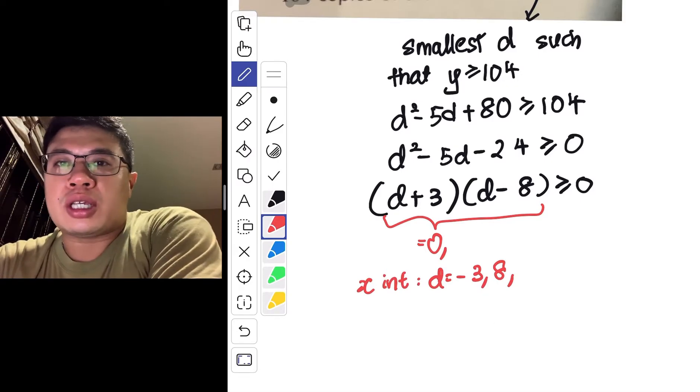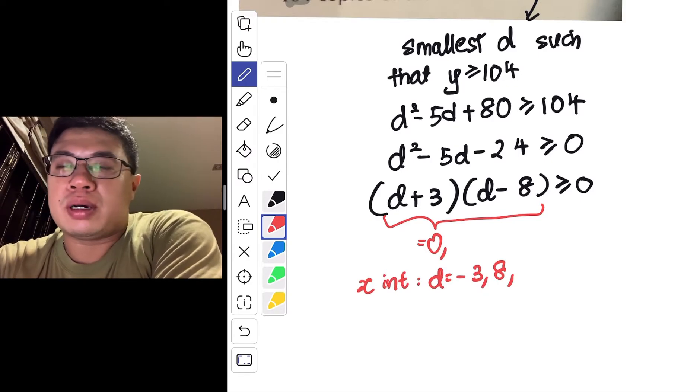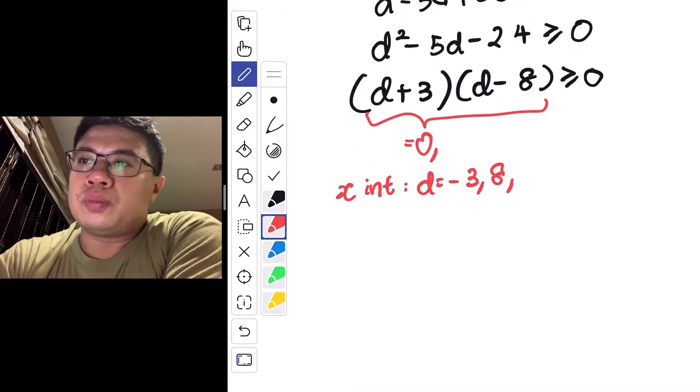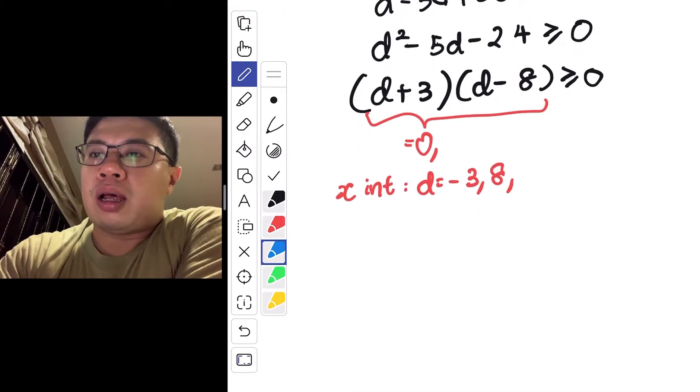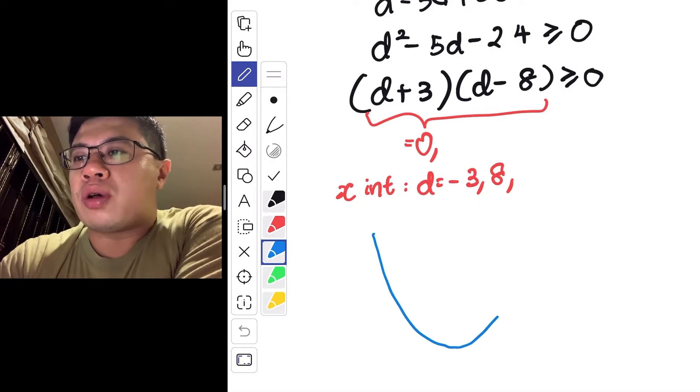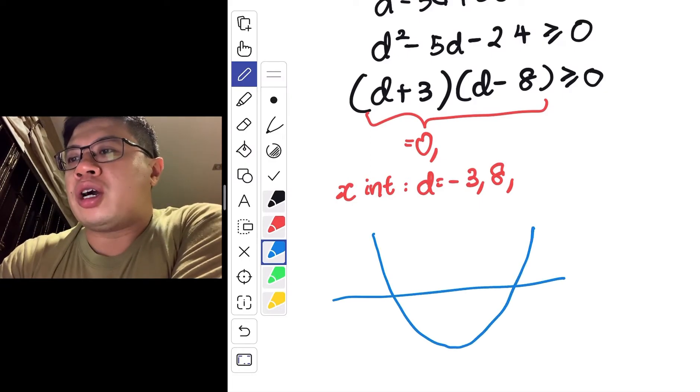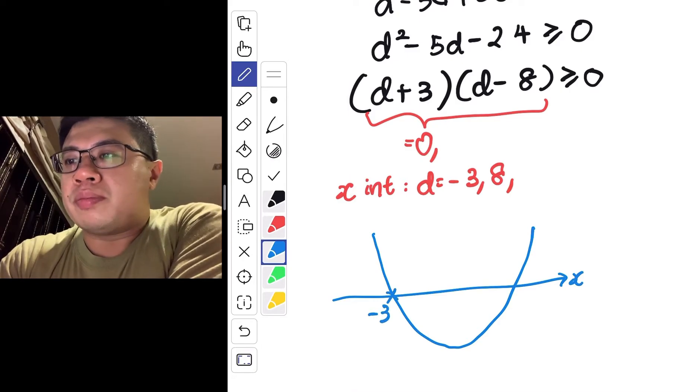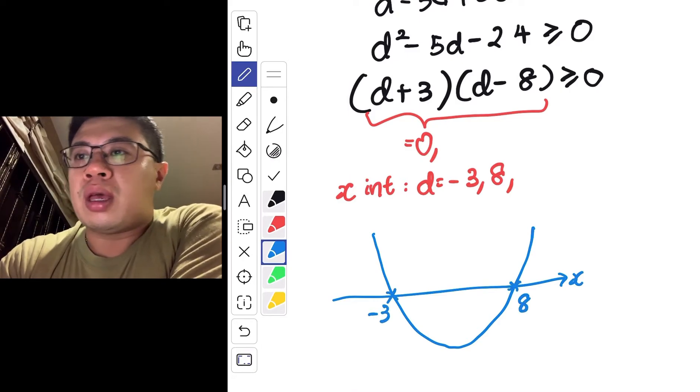Because I'm factorizing them. A lot of the quadratic inequalities that you see are so-called factorizable. So after that, because my coefficient of d square is positive, I sketch my curve, I draw my x-axis, I label my x-intercepts, so to speak.